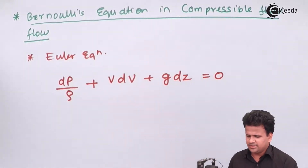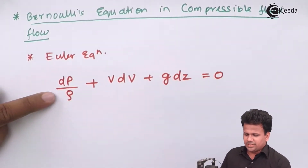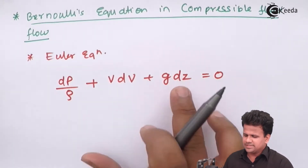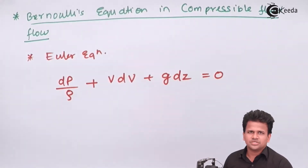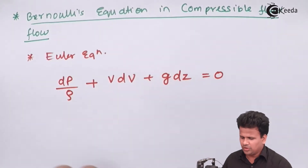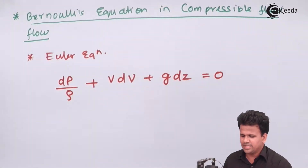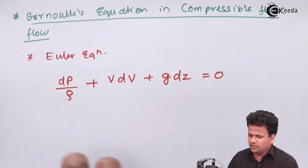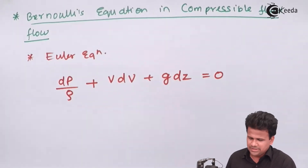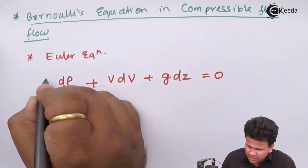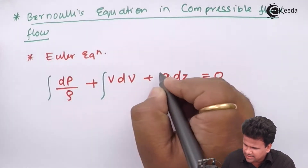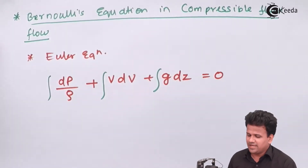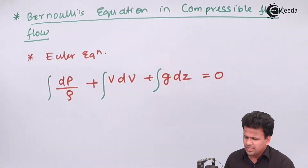What is this? The first term is the pressure energy head, the second is the kinetic energy head, and the third is the potential energy head. The sum of all these energy heads is always zero. The integral of Euler's equation will give us Bernoulli's equation.